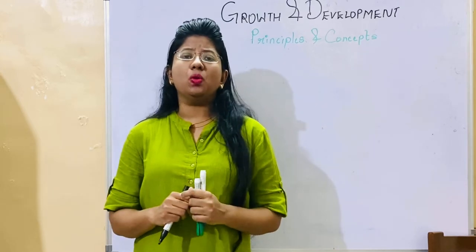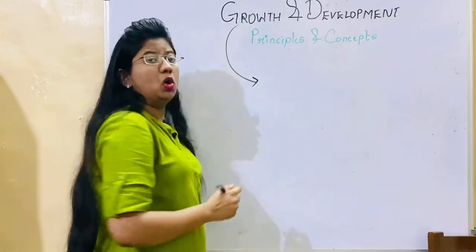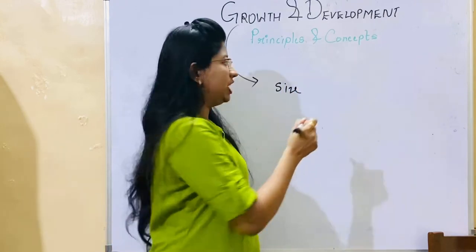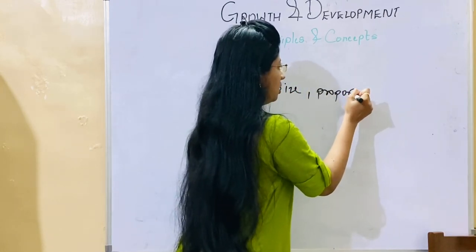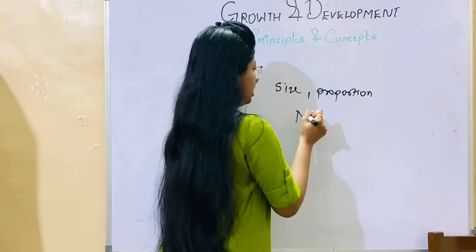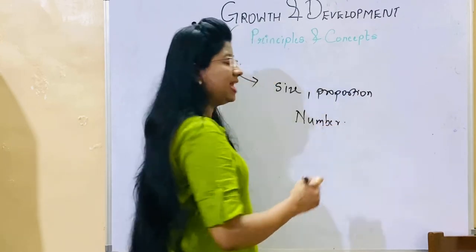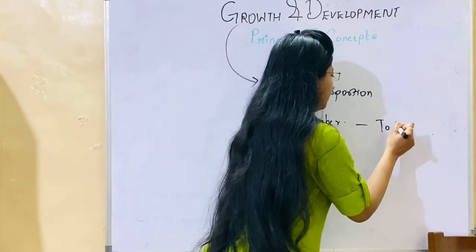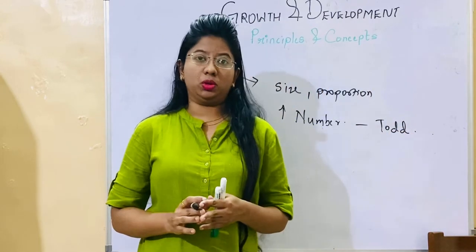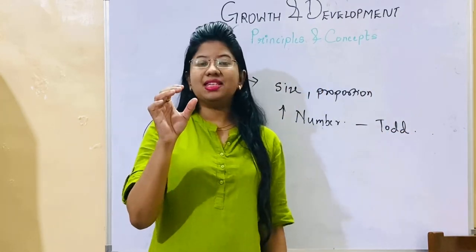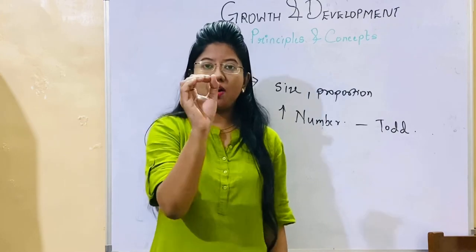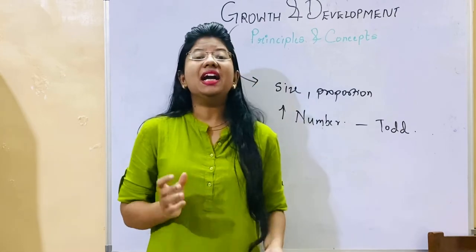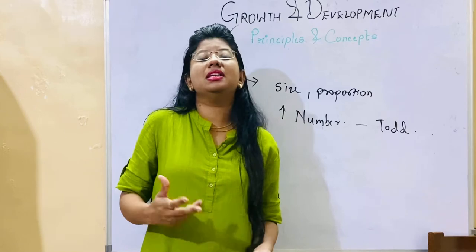First we would like to know what do you mean by growth. Growth means change in size, or change in proportion, or increase in number. Increase in number is a definition given by Todd. Basically, if you have a ball of size 2, when it grows it increases in size and proportion.